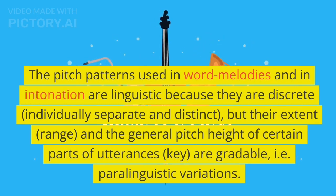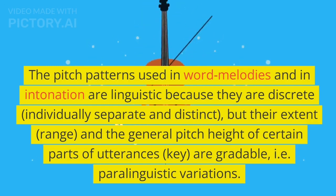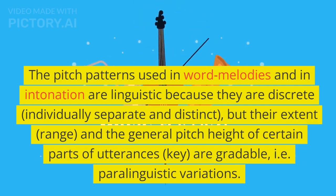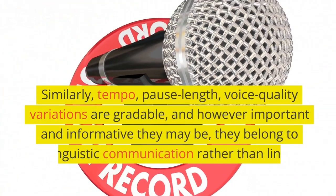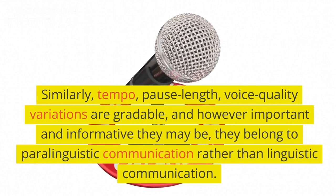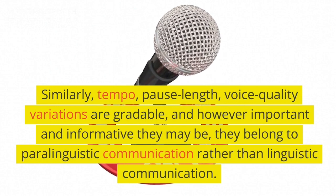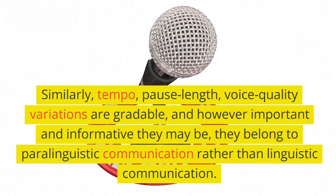The extent, range, and general pitch height of certain parts of utterances — called 'key' — are gradable, i.e., paralinguistic variations. Similarly, tempo, pause length, and voice quality variations are gradable, and however important and informative they may be, they belong to paralinguistic communication rather than linguistic communication.